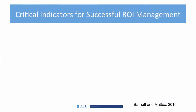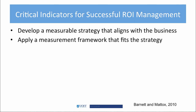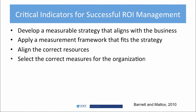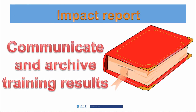According to Barnett and Maddox, there are five critical indicators of successful ROI management. The first is to develop a measurable strategy that aligns with the business. Next, apply a measurement framework that fits the strategy. The third indicator is aligning the correct resources. Then, select the correct measures for the organization. Finally, ensure the organization is culturally prepared for change. The final product of the plan is the impact report, which is created to communicate and archive the training results. The report is used to validate the training intervention, provide information about additional training interventions, and evaluate the training model used.